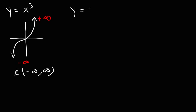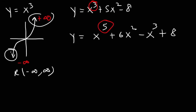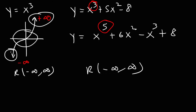For any polynomial where the leading term has an odd exponent, the end behavior will always go from negative infinity to positive infinity, or the other way around. So the range is just going to be negative infinity to positive infinity. In the middle it might vary, but the end result is the same — these are continuous functions. If you know how to graph the function, you can easily find the range.